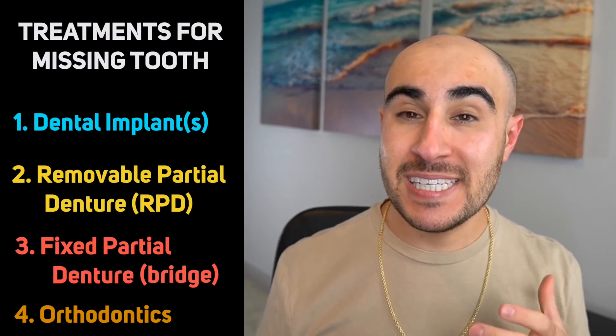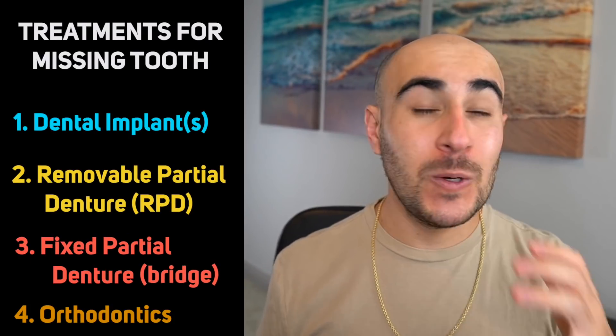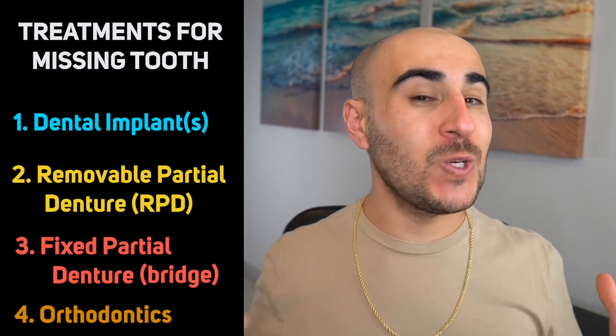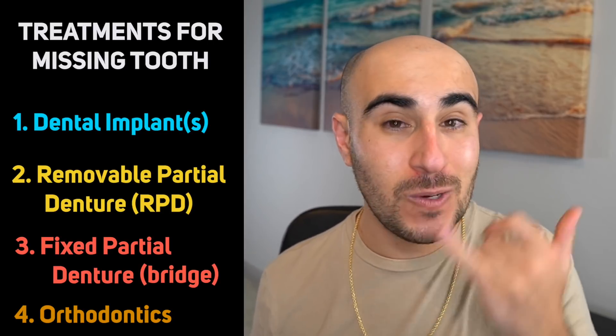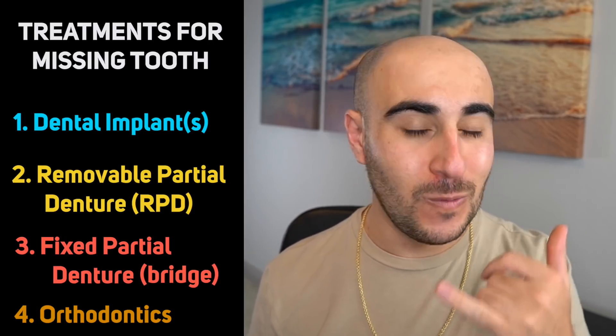Let's talk about orthodontics, because this is the bread and butter of this channel. Orthodontics can be used for treating missing teeth, but only in certain cases. For example, if you're just missing one tooth in one quadrant, orthodontics isn't the best way of treating that. If we close the space for, say, the upper left premolar, all your upper teeth are going to be shifted to the left — it's not simply ideal.